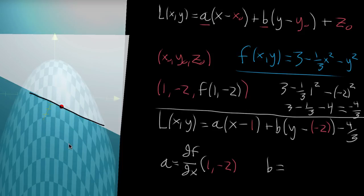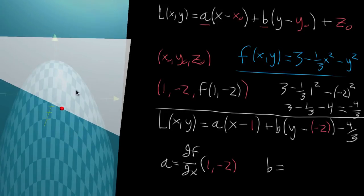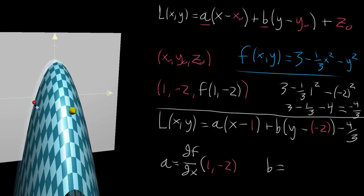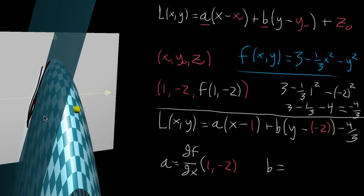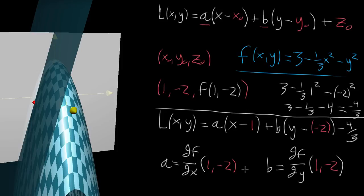Similarly, B should equal the partial derivative of f with respect to y at the point (1, -2). Instead of intersecting with that x-direction slice, we look at movement in the y direction — which in this case looks like a very steep slope. When we bring in the tangent plane, it should intersect with the constant-x plane along that same tangent slope. So B equals the partial derivative of f with respect to y evaluated at (1, -2).